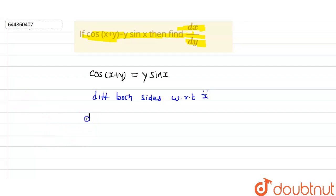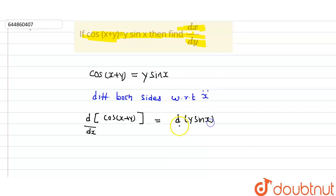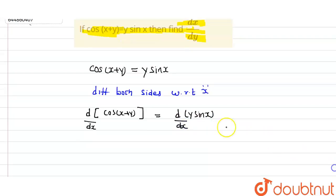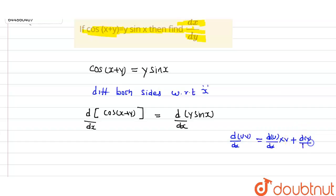Differentiation of cos(x + y) with respect to x equals differentiation of y·sin(x) with respect to x. On the right hand side, apply the product rule: differentiation of u·v with respect to x equals (du/dx)·v + u·(dv/dx).